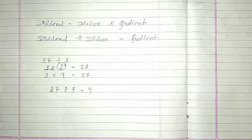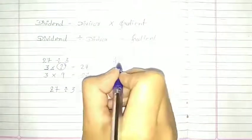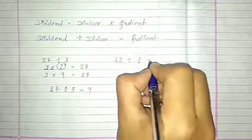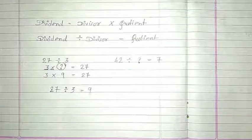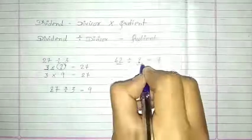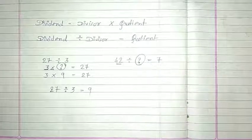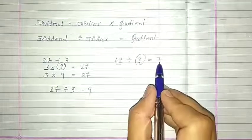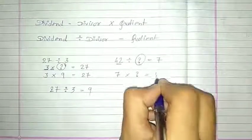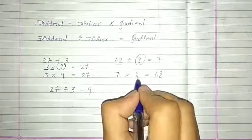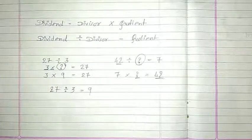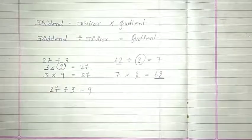Now suppose I have this question: 42 divided by question mark is equal to 7. यहाँ पर क्या है वो मुझे पता नहीं है, और answer हमें पता है 7. Dividend divided by divisor हमें find करना है. कैसे करेंगे हम? 7 का table बोलेंगे, जब तक हमें 42 मिलते हैं.